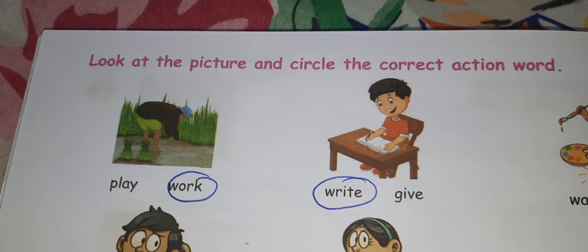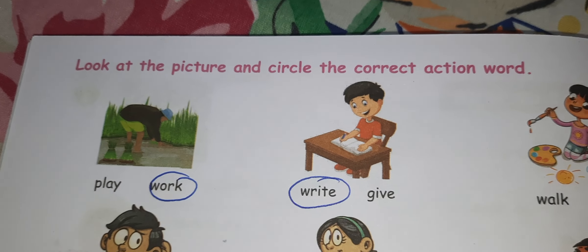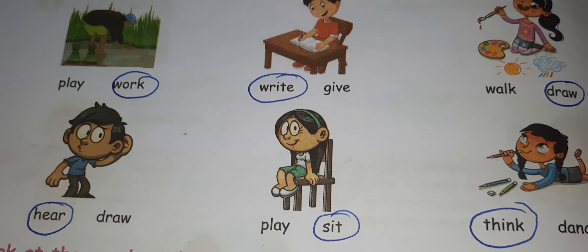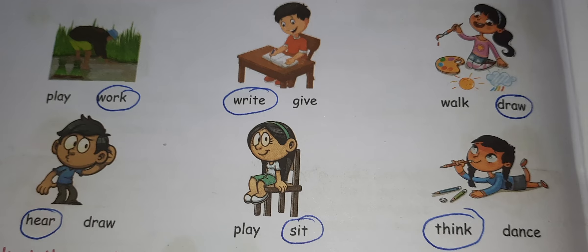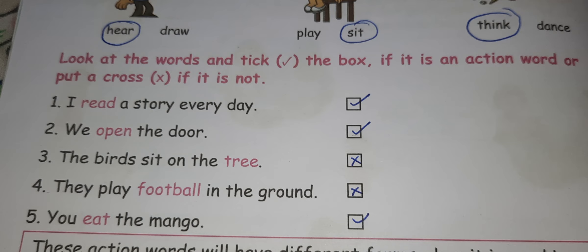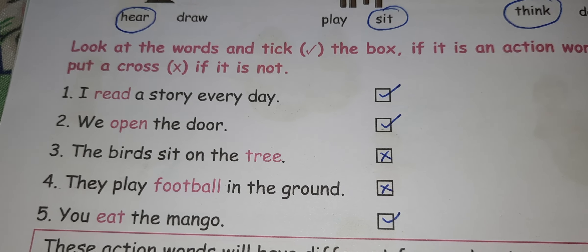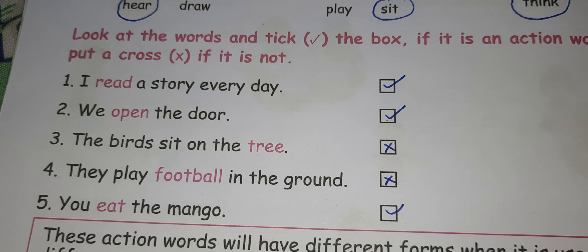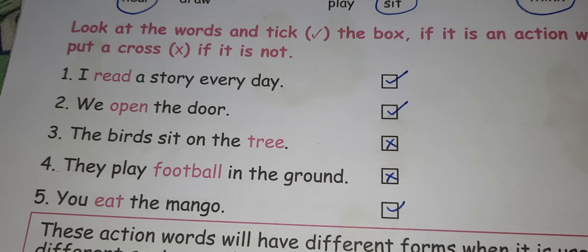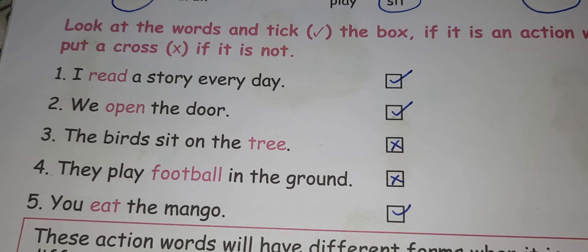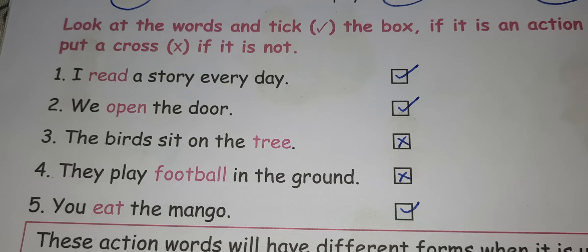In page number 118, look at the picture and circle the correct action word: write, draw, hear, sit, think. Next, look at the words and tick the box if it's an action word or put a cross if it's not. Read - action word. Open - action word. Tree - not an action word, put a cross. Football - it's a noun, not an action word, put a cross. Eat - action word, put a tick. I have marked it for you, you can see.